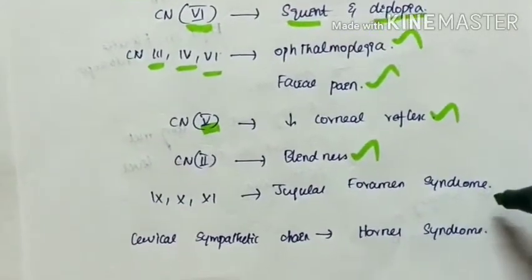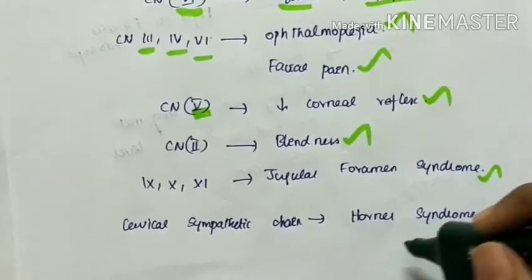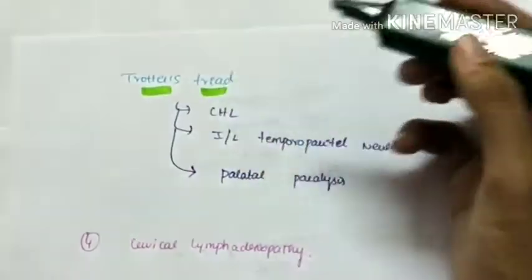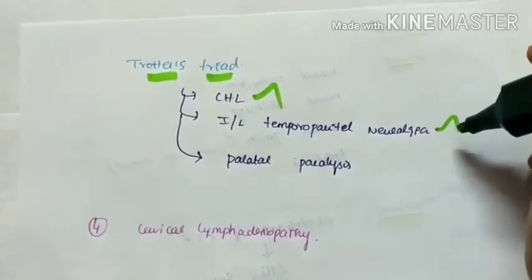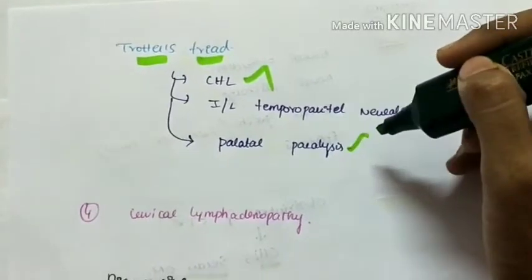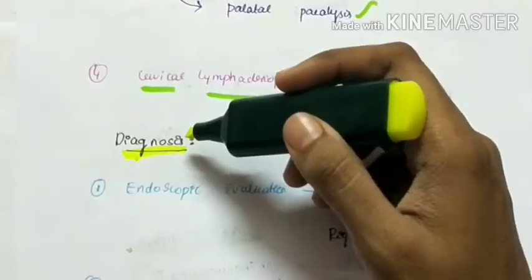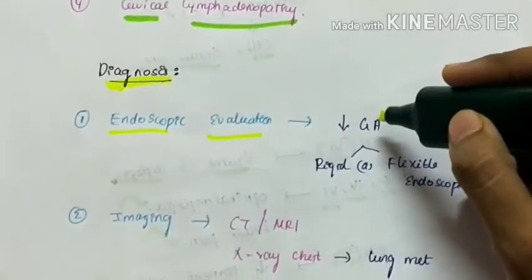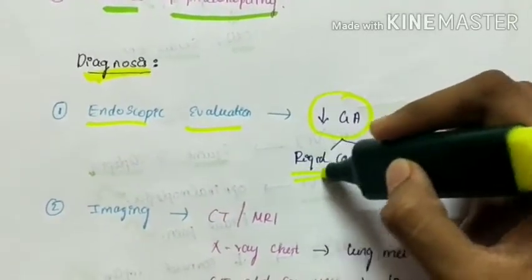Cranial nerves 9, 10, and 11 lead to jugular foramen syndrome. Because of involvement of cervical sympathetic chain, there can be Horner's syndrome. Next, Trotter's triad - there is a triad which includes conductive hearing loss, ipsilateral temporal-parietal neuralgia, and soft palate paralysis. Also there can be cervical lymphadenopathy as symptoms.